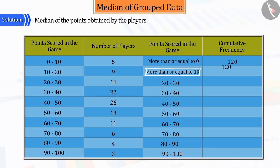Similarly, if we count the number of players who scored more than or equal to 10, then their number will be 115. Because 5 players have already scored the points of the class before that, i.e., the class interval between 0 and 10.